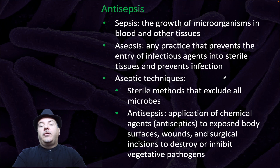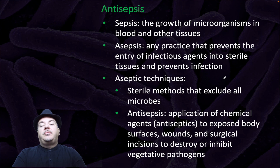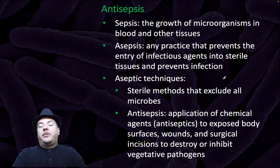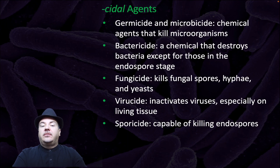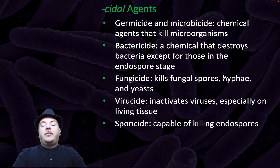Antisepsis: sepsis is the growth of microorganisms in blood or other tissues. Asepsis is any practice that prevents the entry of infectious agents into sterile tissues and prevents infection. Aseptic techniques include sterile methods that exclude all microbes. Antisepsis is the application of a chemical agent called antiseptics to exposed body surfaces, wounds, and surgical incisions to destroy or inhibit vegetative pathogens. Cidal agents — germicide and microbicide — are chemical agents that kill microorganisms. Bactericide destroys bacteria except those in the endospore stage. Fungicide kills fungal spores, hyphae, and yeast. Viricide inactivates viruses, especially on living tissues. And sporicide is capable of killing endospores.